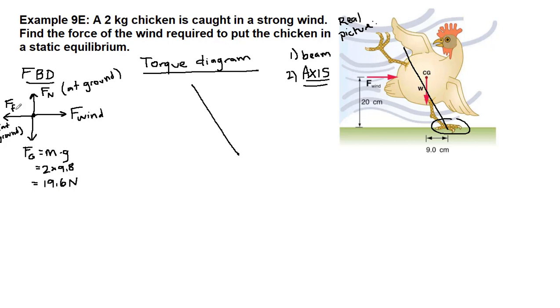If we choose the axis to be acting at the chicken's foot, we get rid of two of these forces in our torque diagram. That's excellent. That's a lot less work for us. So we're going to choose the axis at the foot because it means that there's going to be two forces we can ignore in our torque diagram.